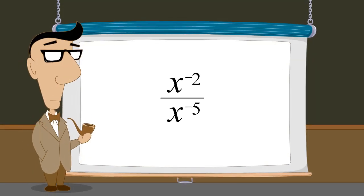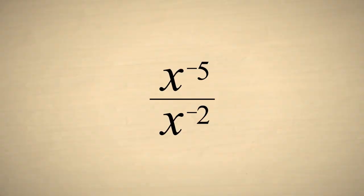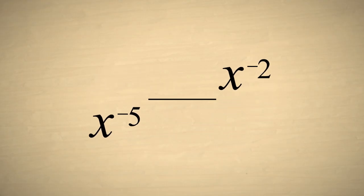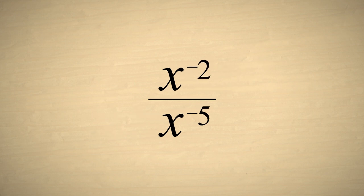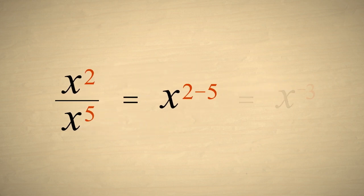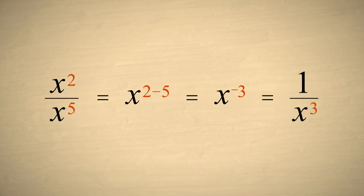Now, instead of x to the negative two over x to the negative five, let's simplify the expression x to the negative five over x to the negative two. We swap the numerator and denominator terms and switch the sign of the exponents. Then subtracting the exponents, we get x to the negative third power, which is the same as one over x cubed.